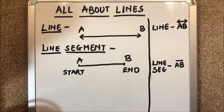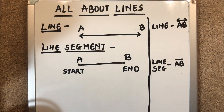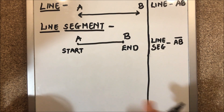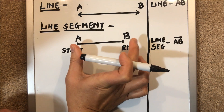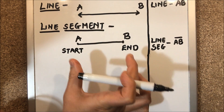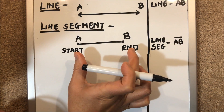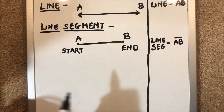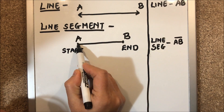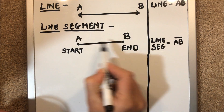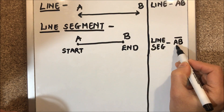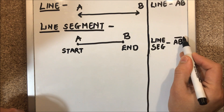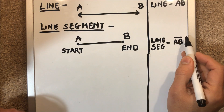Next we have line segment. A line segment is a segment or a part taken from a line, but it is having a fixed start point and end point, so it is having a fixed length. This is line segment AB, and we represent a line segment as AB with a bar only — no arrows.